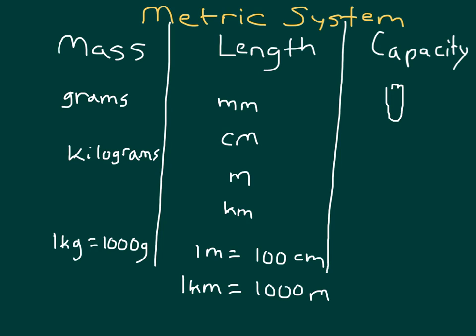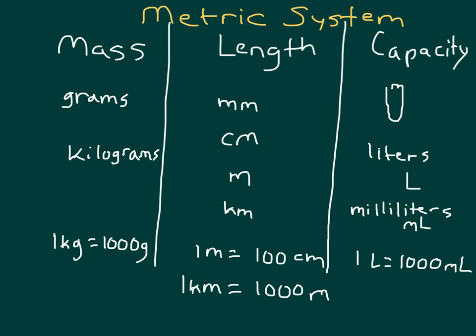With capacity, we have been talking about liters, which we abbreviate as L, and we've been talking about one-thousandth of a liter, or a milliliter, abbreviated as mL. The relationship there is that one liter is equal to 1,000 milliliters. Those are the units of measure for mass, length, and capacity.